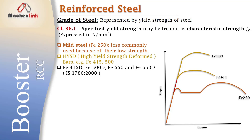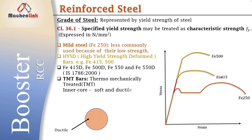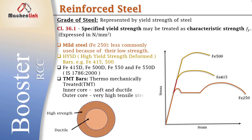Some advanced technologies are also available in steel to prevent corrosion. For example, TMT bars, which are thermo-mechanical treated bars. The inner core of these bars is soft and ductile, and the outer core shows very high tensile strength. These bars come with an anti-corrosive coating.